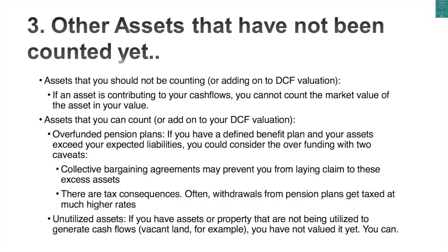After dealing with cash and cross-holdings, the third step is to look around for any other assets you want to bring into the mix. You don't want to double count: any asset that is already generating cash flows should not be added separately. If you have a factory with a physical real estate value, don't add it to the present value of cash flows from operating the factory. What you're looking for are truly unutilized assets that have value but haven't been counted in your cash flows.